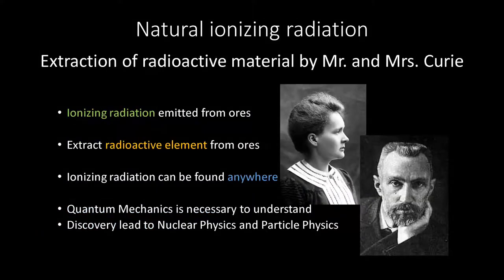X-rays are artificial radiation, but it is now known that there are other types of radiation in nature. Research at the time revealed that radiation is emitted from naturally occurring ores. This was the discovery of a new type of radiation, different from X-rays.